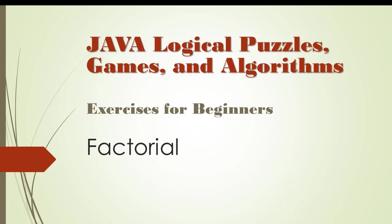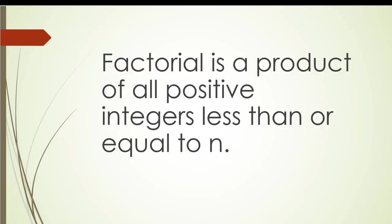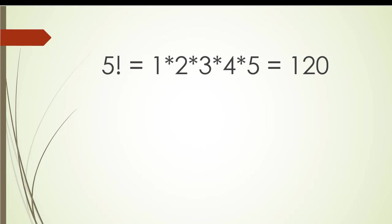In this video we are going to calculate a factorial. The official definition says that factorial is a product of all positive integers less than or equal to n. So if we take for example the number 5, then 5 factorial — denoted with an exclamation point — equals 1 times 2 times 3 times 4 times 5, which equals 120.